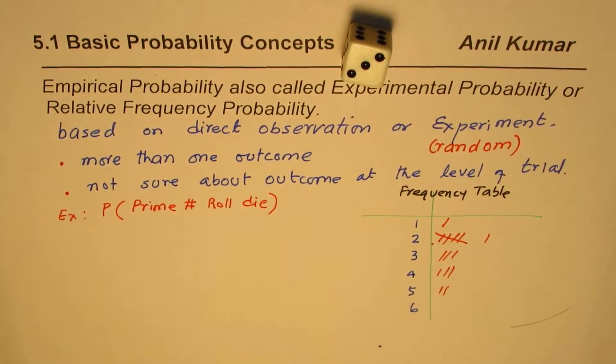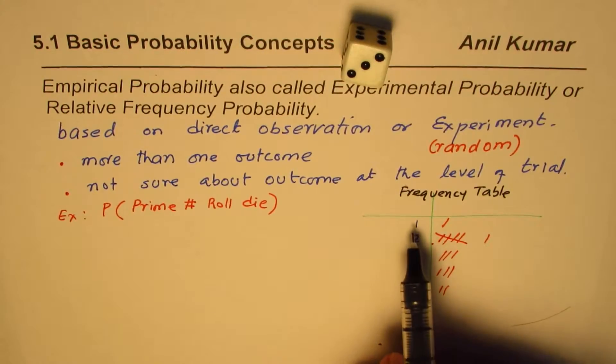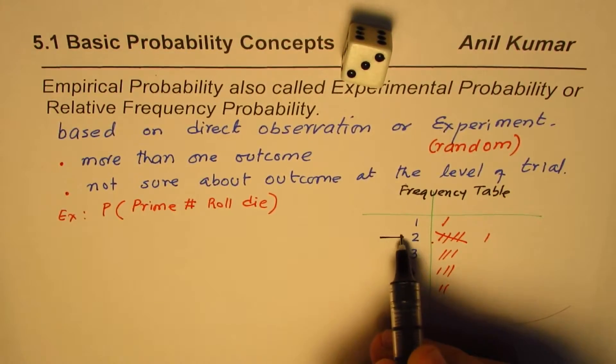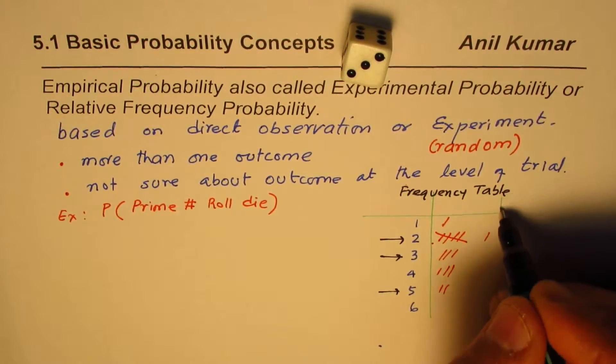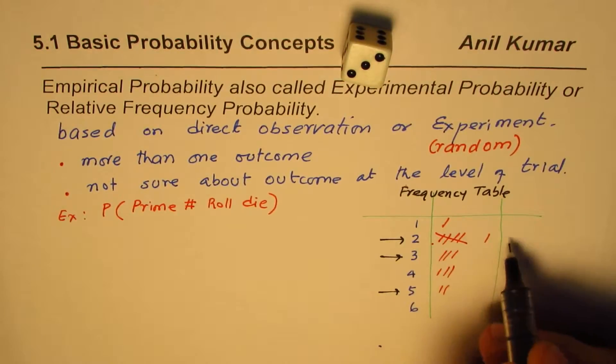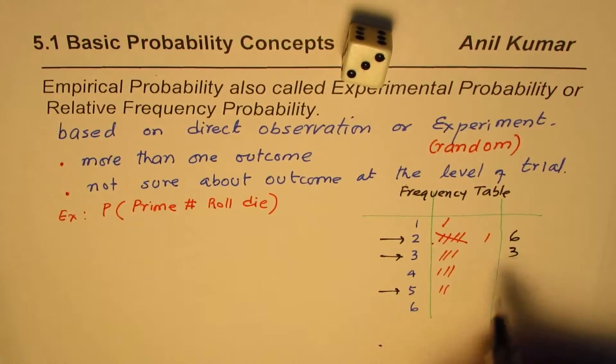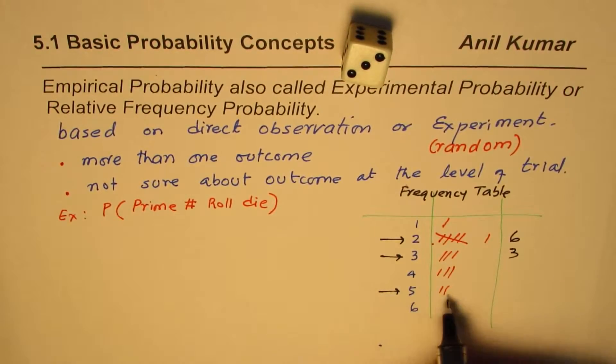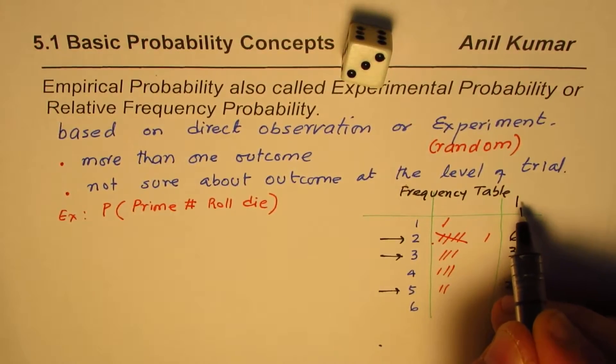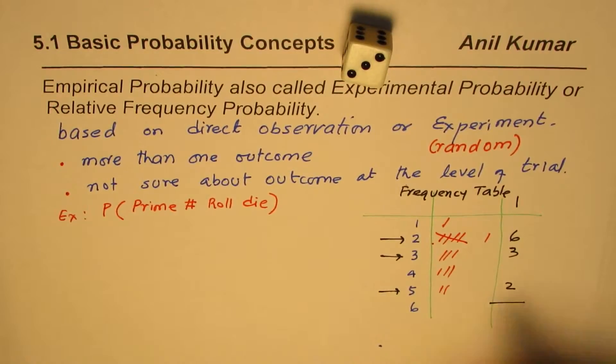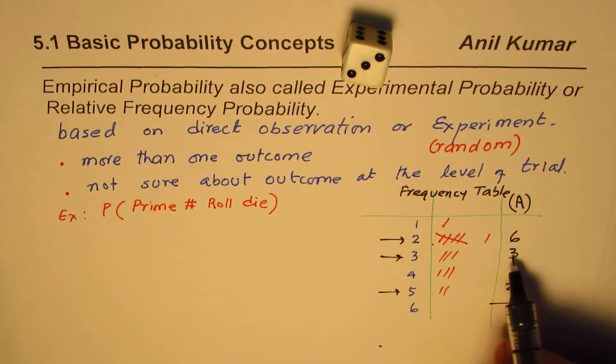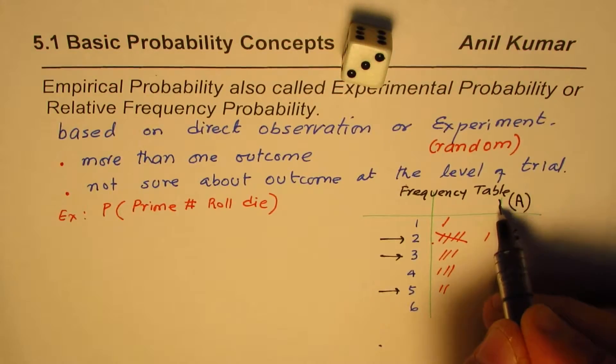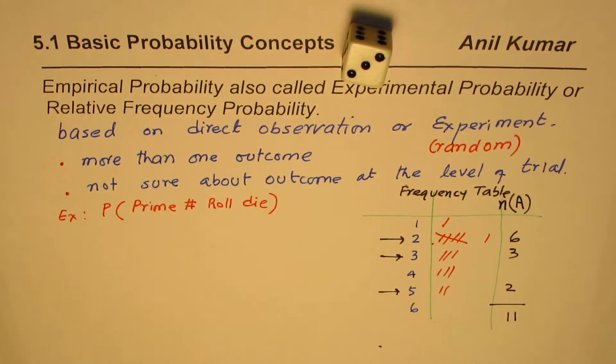So in this prime numbers, what are the prime numbers for us? One is not a prime number since it has only one factor. Prime numbers are number two, three, and five. So these are the prime numbers. So let's count. How many twos did we get? So what I will do now is just count right here itself. We get five plus one, six prime numbers. Three is a prime number. We get three of them. And five, we get two of them. So the prime numbers, let me call them this event as A. So the number of times we got A is six plus three, nine plus two, eleven.